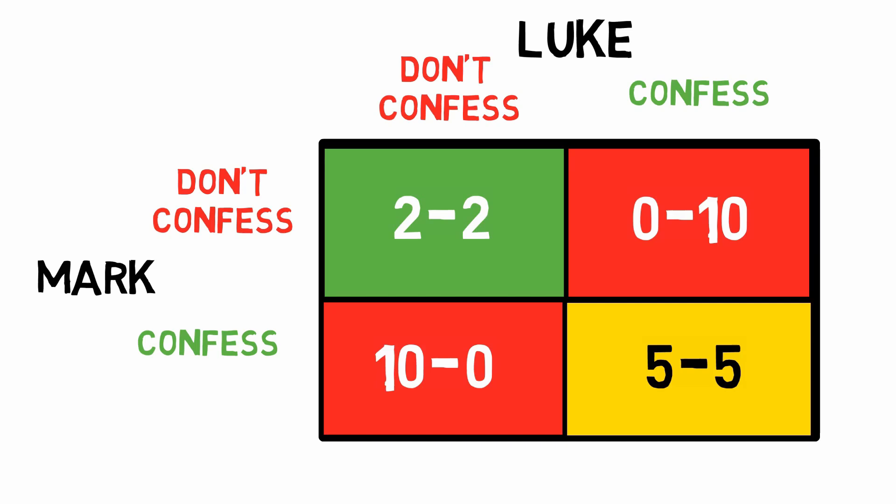In theory, if this were a cooperative game, neither should confess — combined, they would spend only four years in prison, two years each. However, since there's no emotional bond between the two of them, in theory, if one of them knew that the other doesn't confess, he should automatically confess to be freed immediately. Furthermore, if things go wrong and his partner also confesses, he would end up being sentenced to five years instead of ten, which isn't as bad.